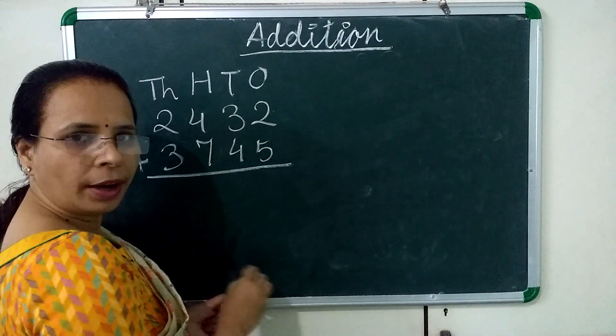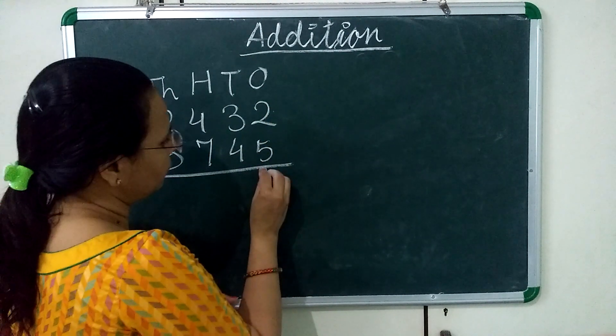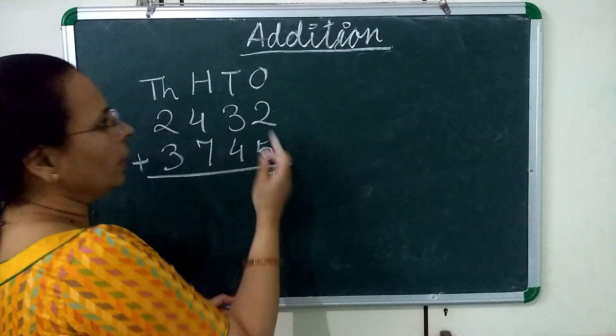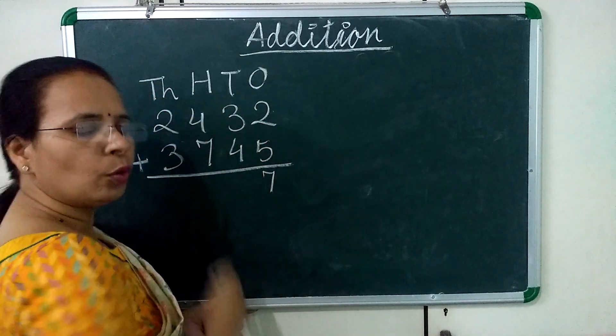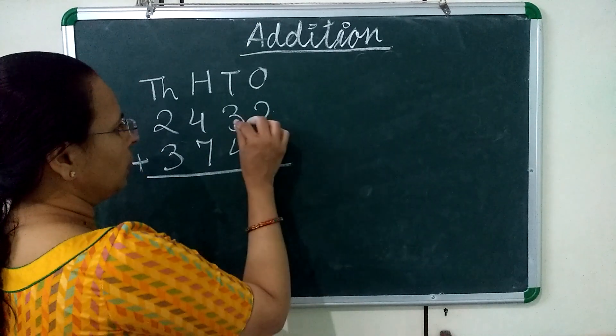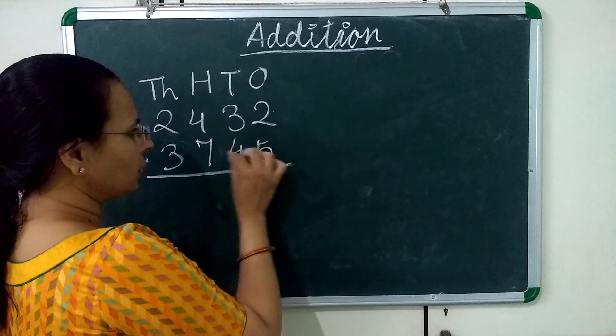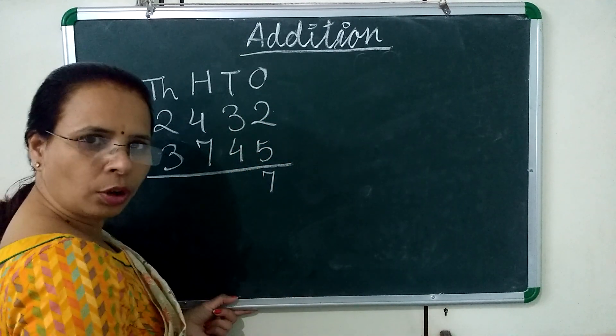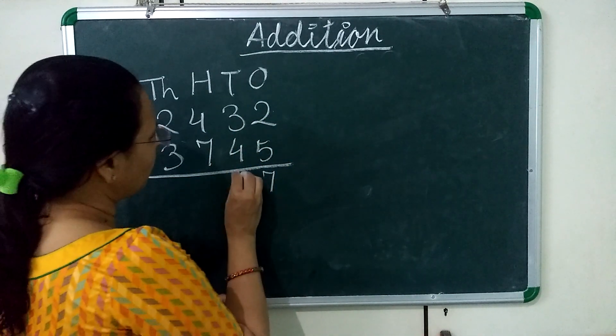2 plus 5 is 7. Now we will move to the 10's place. 3 plus 4 is 7.